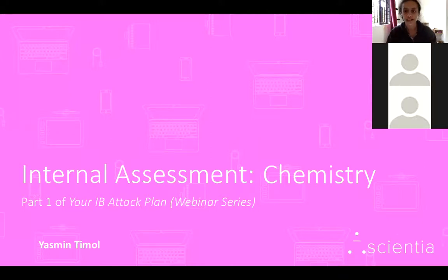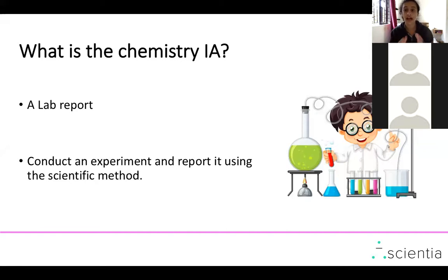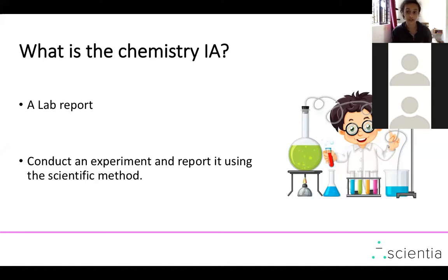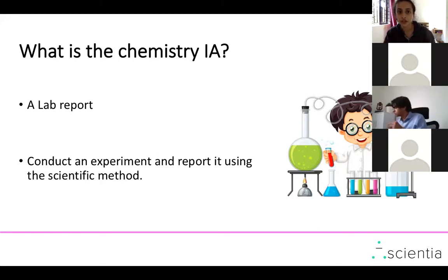The chemistry IA is essentially a big lab report. You need to conduct some kind of experiment and report your findings. It can be a practical experiment or a database IA — something quite a few students are having to do due to the pandemic, since they don't necessarily have access to labs. Either way, you're still conducting an important piece of research and reporting it in the proper scientific way.